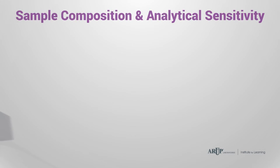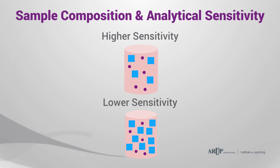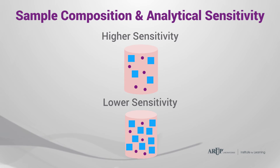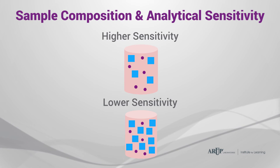Both samples contain the same number of viral particles, symbolized in purple, but the bottom sample has a higher number of patient sequences. Resulting sequencing libraries from the bottom sample will contain a lower abundance of viral sequences. Internal controls spiked into the samples at known concentration can be used to identify samples with lower sensitivity.